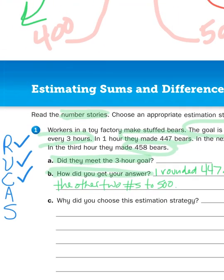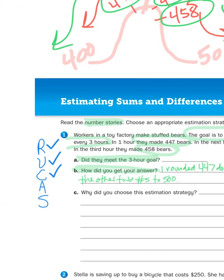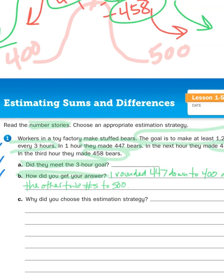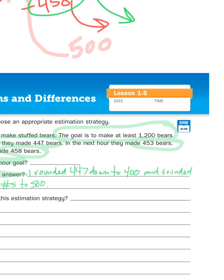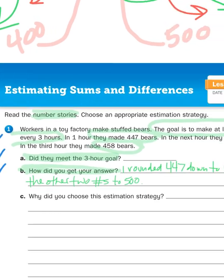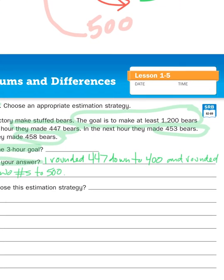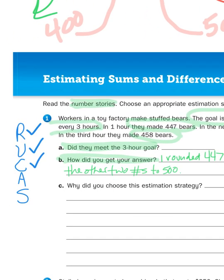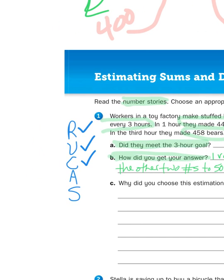Now, we have done some estimation, but we still don't have an action plan. What do I need to do with these numbers? Well, the goal was to make 1,200 bears in three hours. So, in one hour, they made 447. The second hour, they made 453. The third hour, they made 458. So, this, to me, sounds like an addition problem. So, my action plan is to take those numbers and add them together.